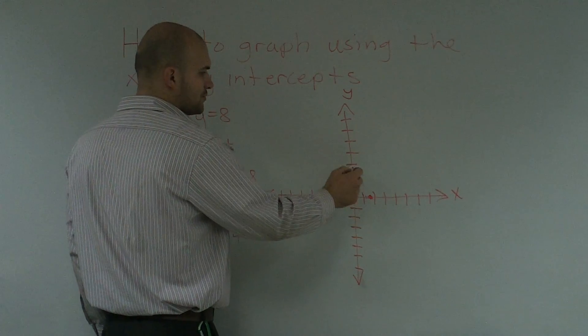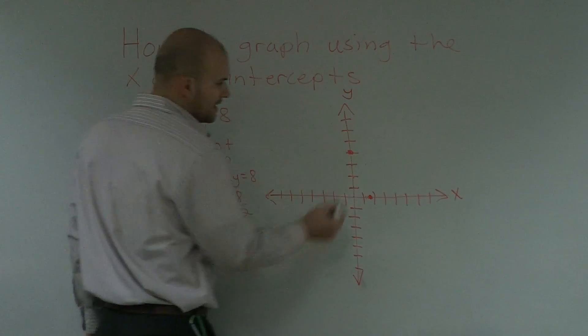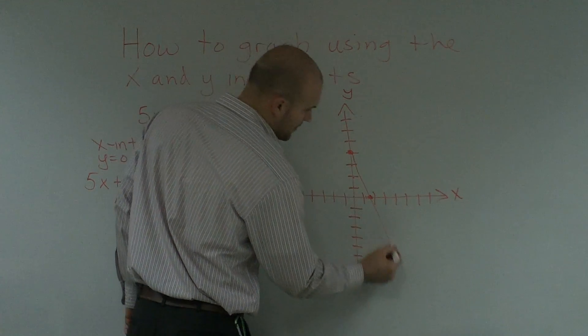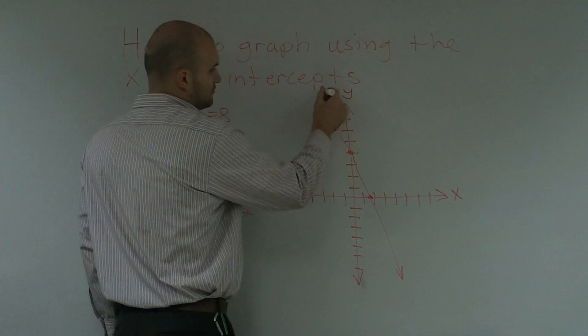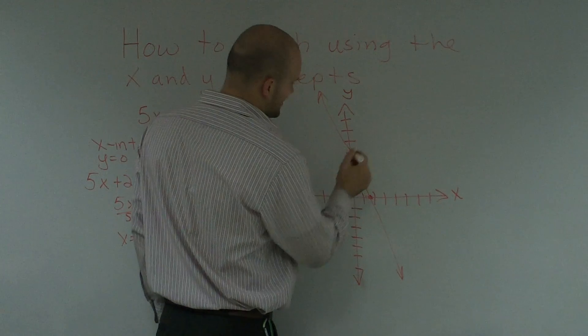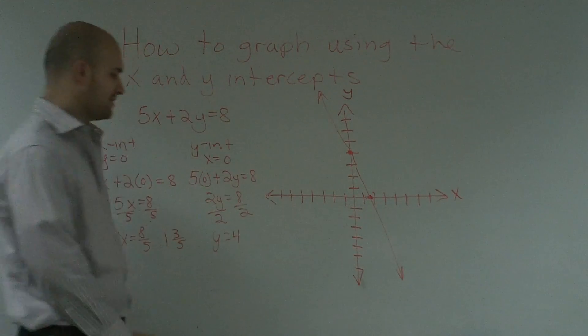So I go up 4. 1, 2, 3, 4. Then, I just connect my two dots. And I try to make a straight line. And that's going to be my equation.